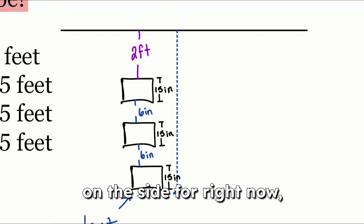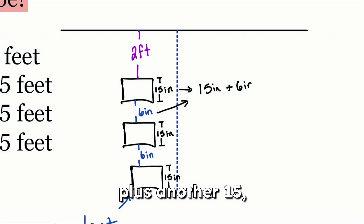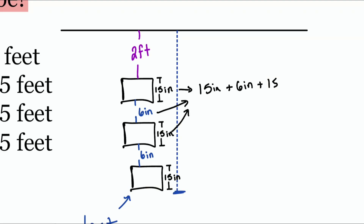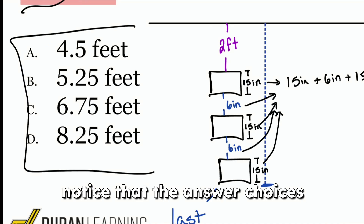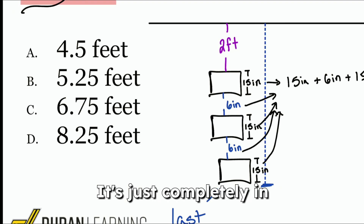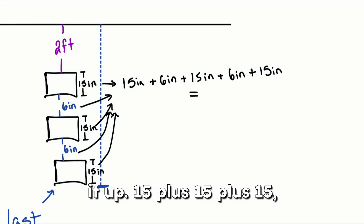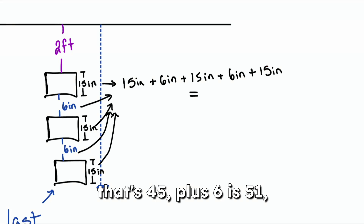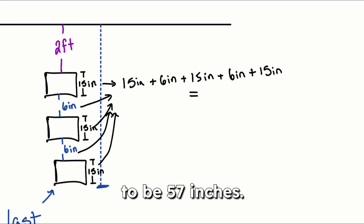So let's set the two feet aside for now and put together everything else. We're going to have 15 inches plus 6 inches plus another 15 plus another 6 plus another 15. Adding those up: 15 plus 15 plus 15 is 45, plus 6 is 51, plus another 6 is 57. So that right there is going to be 57 inches total.